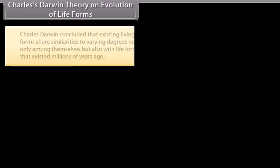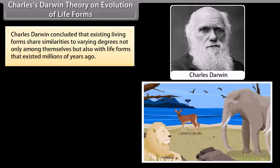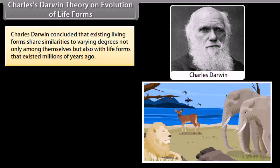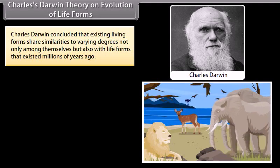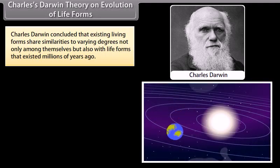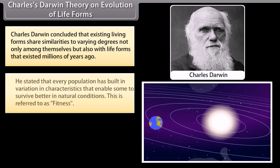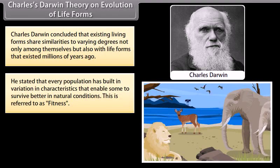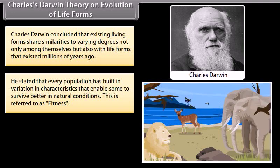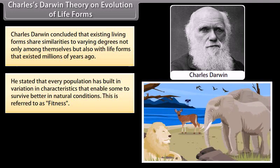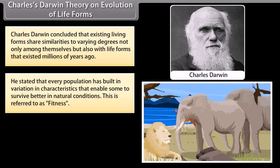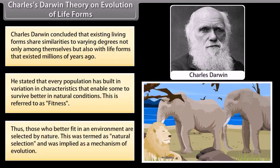Charles Darwin's Theory on Evolution of Life Forms: Charles Darwin concluded that existing living forms share similarities to varying degrees — not only among themselves but also with life forms that existed millions of years ago. He stated that every population has built-in variation in characteristics that enabled some to survive better in natural conditions; this is referred to as fitness. Those who better fit in an environment are selected by nature — this was termed natural selection and implied as a mechanism of evolution.